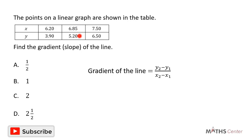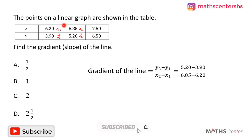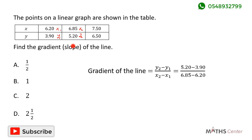I'll use the second point as x2, y2 and the first point as x1, y1. Substituting into the formula, the gradient is y2 minus y1 divided by x2 minus x1. So y2 is 5.20 and y1 is 3.90, divided by x2 which is 6.85 minus x1 which is 6.20. This gives us 2, so the gradient of the line is 2. The correct option is C.